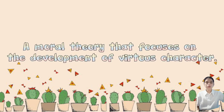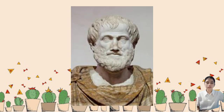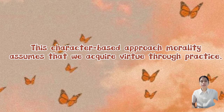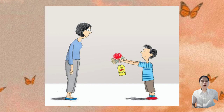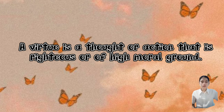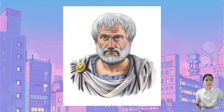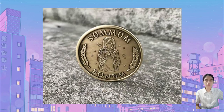Virtue ethics is a moral theory that focuses on the development of virtuous character — behavior showing high moral standards — developed by Aristotle and other ancient Greeks. This character-based approach to morality assumes that we acquire virtue through practice: by practicing being honest, brave, just, and generous, a person develops an honorable and moral character. A virtue is a thought or action that is righteous or of high moral ground. According to Aristotle, by owning virtuous habits, people will likely make the right choice when faced with ethical challenges. By living virtuously, we can achieve eudaimonia — the ultimate goal of reason and the highest good.